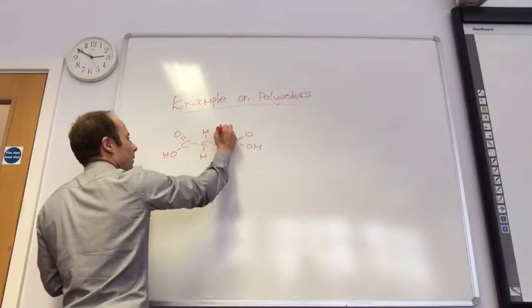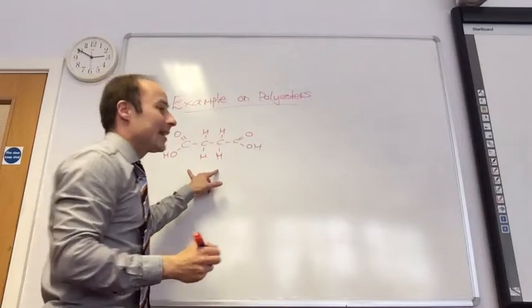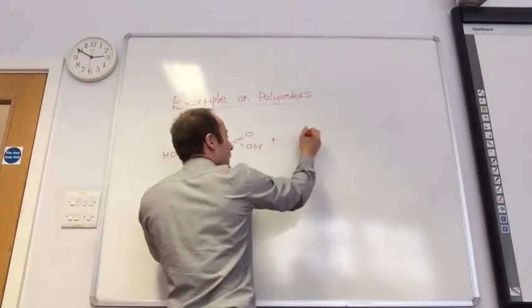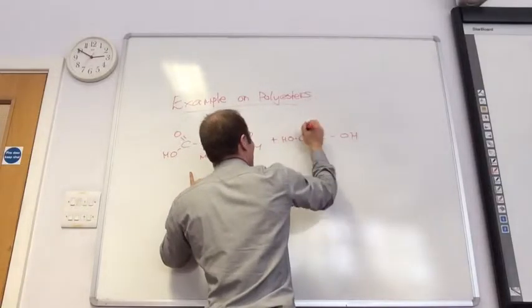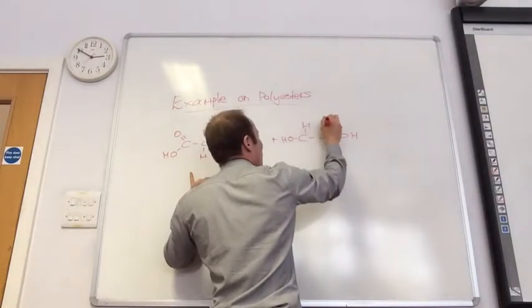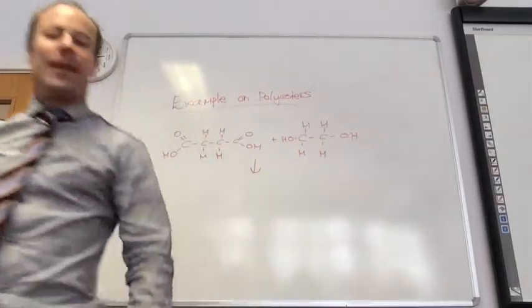So we need to draw another one next to it, and then make it into a polyester. Well that's one, that's my diacid, and I'd like you to join up with this. You can just do it with one color. Can I draw some paper? Right, so, give it a go.